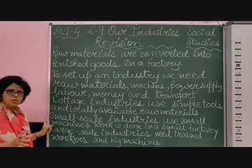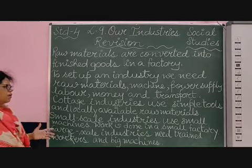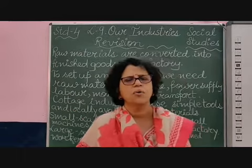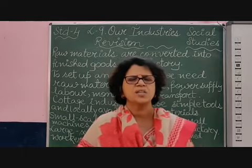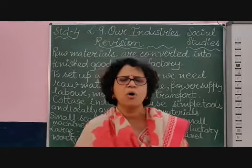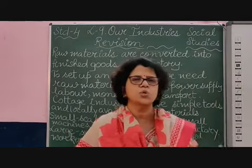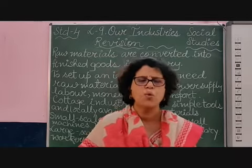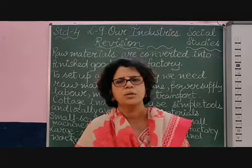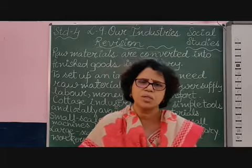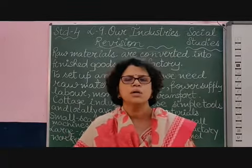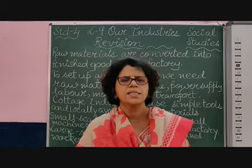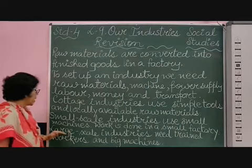Then comes our small scale industry, which uses small machines and is done in a small factory with a less number of people. For example, industries for making plastic goods — various items you use at home, your water bottles, tiffin boxes, electrical items like lights and fans. In small scale industry even utensils are made, as well as garments. These are all made in small scale industries where huge factories and large machines are not needed, and fewer people are working.